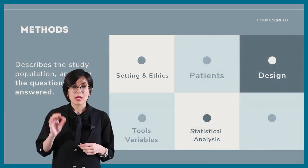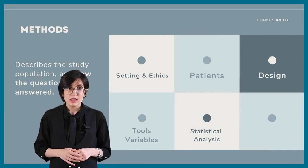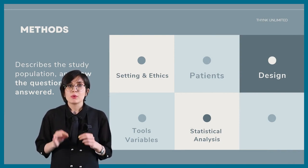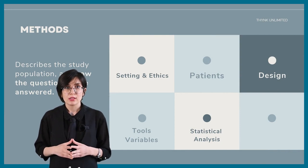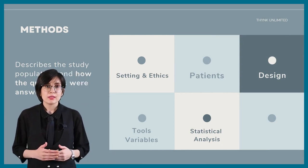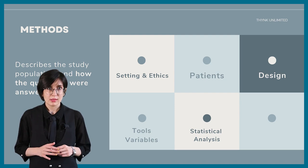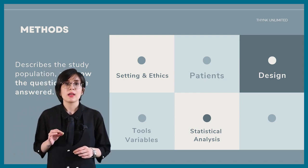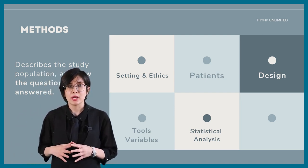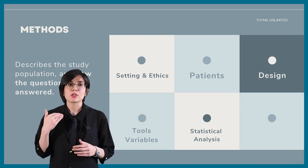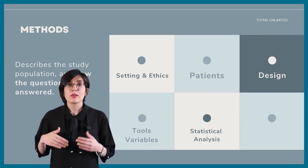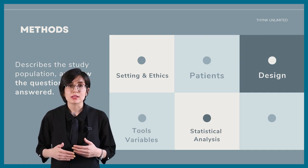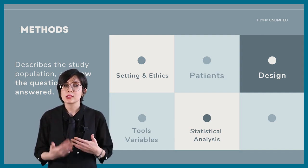Writing of the methods is the second part. You must describe the study population and how the questions were answered in this part. There are multiple subheadings under the main heading of methods. The research setting and ethical issues would be the first subheading, where you include information on the location and timeframe of your study, as well as your ethical considerations, such as informed consent or Helsinki declaration standards.